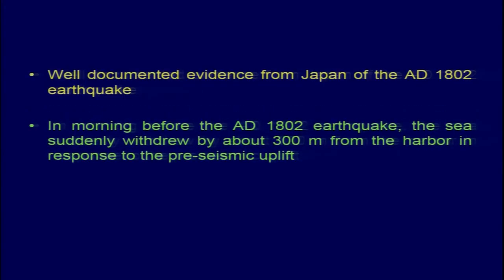There is another evidence observed in the 1802 earthquake of Japan. In the morning before that earthquake, the sea suddenly withdrew by about 300 meters because of pre-seismic uplift. This phenomenon was also observed and experienced by few people during the 2004 Sumatra-Andaman earthquake, but we were not aware that such phenomena is related to the occurrence of a big earthquake.